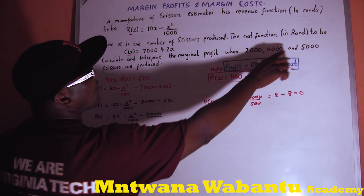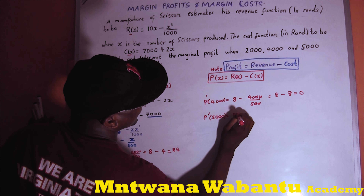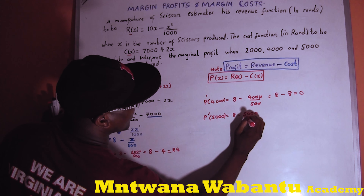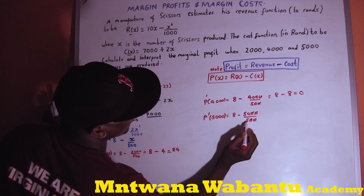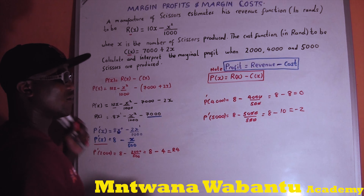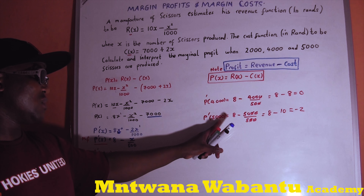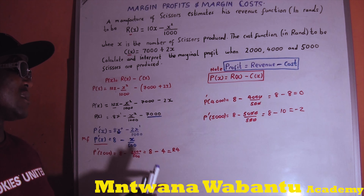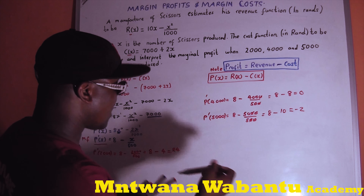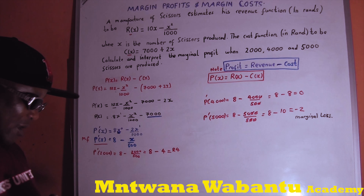Now for x equals 5000: marginal profit of 5000 equals 8 minus 5000 over 500. 5000 over 500 equals 10, so we get 8 minus 10 equals negative 2. We get a loss! If I produce 5000 scissors I will get a marginal loss — meaning it's not profit anymore.